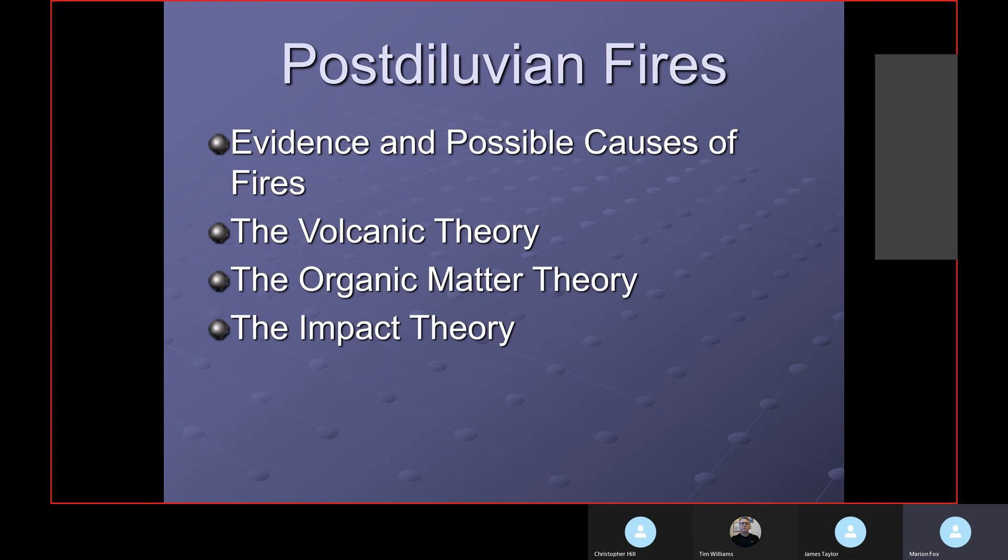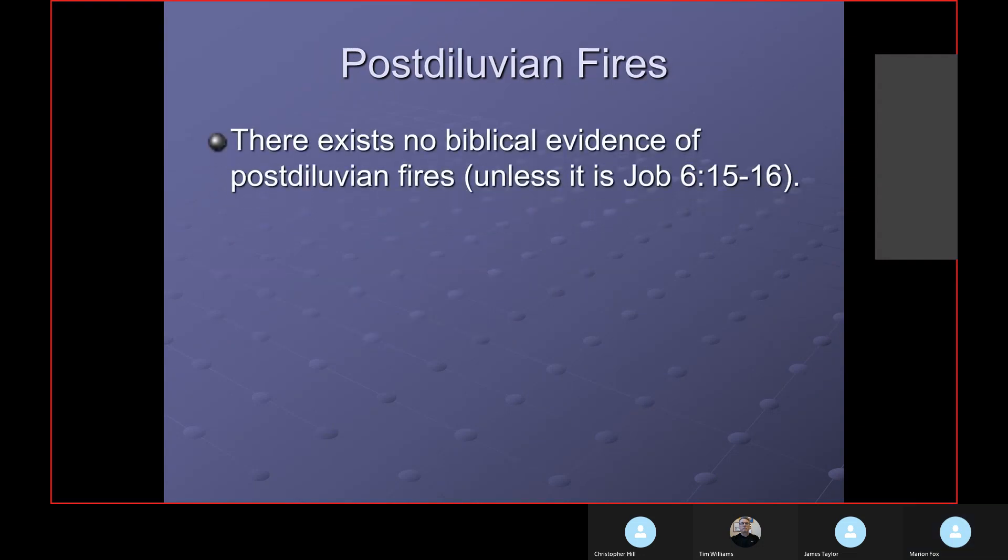There's the impact theory that meteorites impacted the earth and set things on fire. We know volcanoes can set things on fire, we know meteorites can do it. There's evidence that organic matter can concentrate iridium, particularly the iridium and maybe even other platinum group elements. There exists, however, no biblical evidence of post-diluvian fire unless it's Job 6:15 and 16.